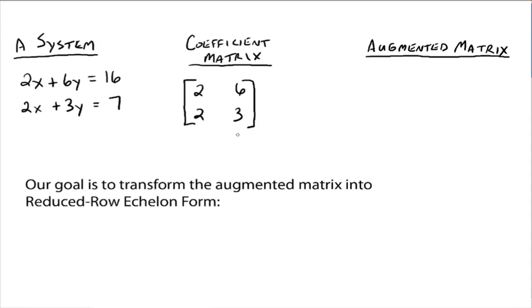Alright, so right now, though, we're going to talk about and spend most of our time with what's called the augmented matrix. What the augmented matrix is, is you've got the coefficients, 2, 6, 2, 3, but we're also going to tag on that column that's on the other side, the equals sign, the constant, or what I refer to as the answer stuff over here.